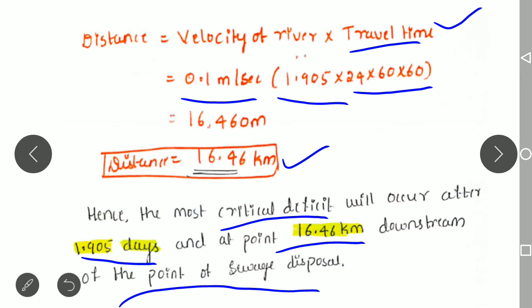So this is how we determine the DO deficiency in the mixture and at what time and distance the critical DO deficiency will occur in a river receiving sewage. Hope you have understood the numerical calculation of dissolved oxygen deficiency. Thank you.